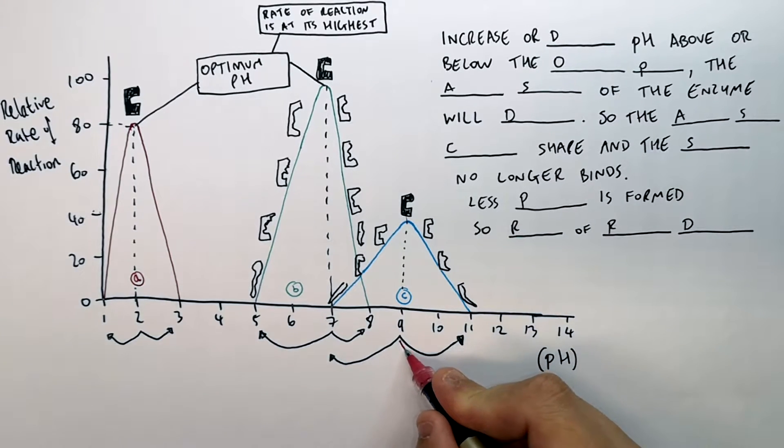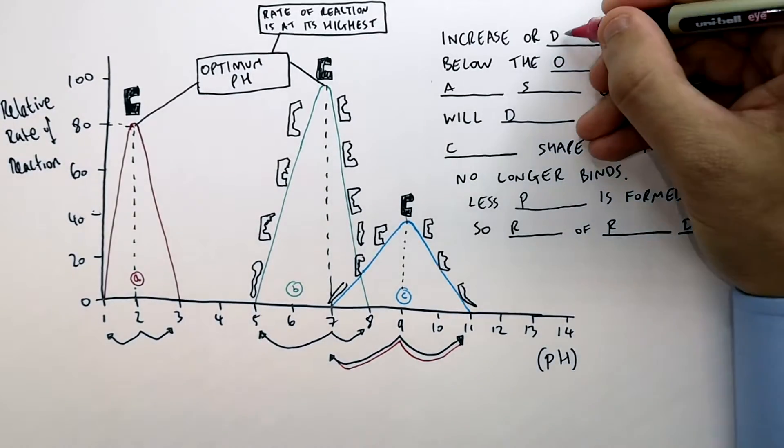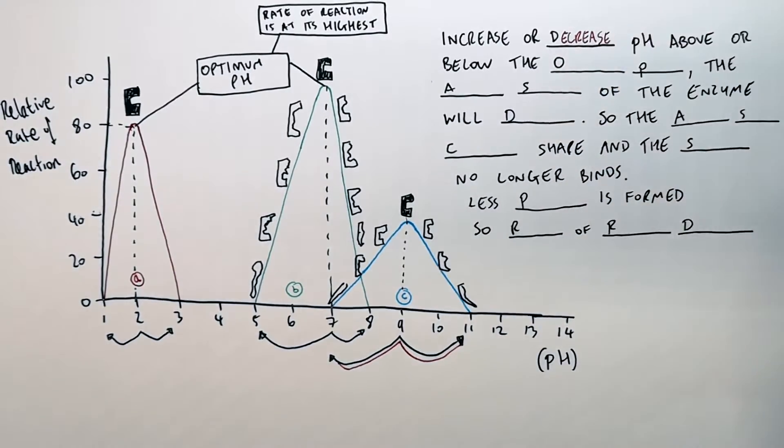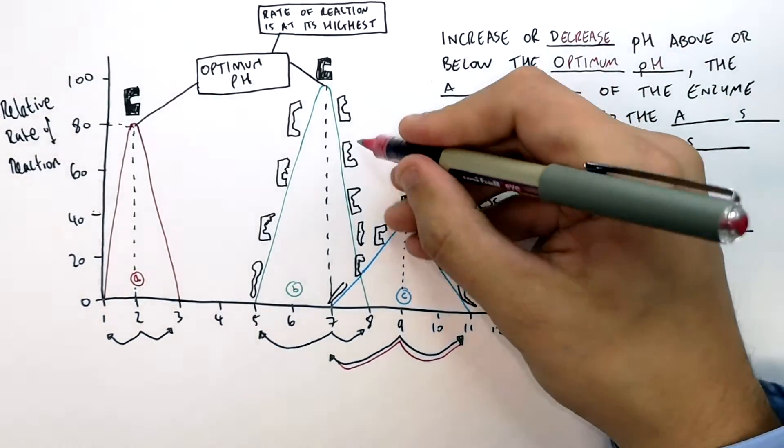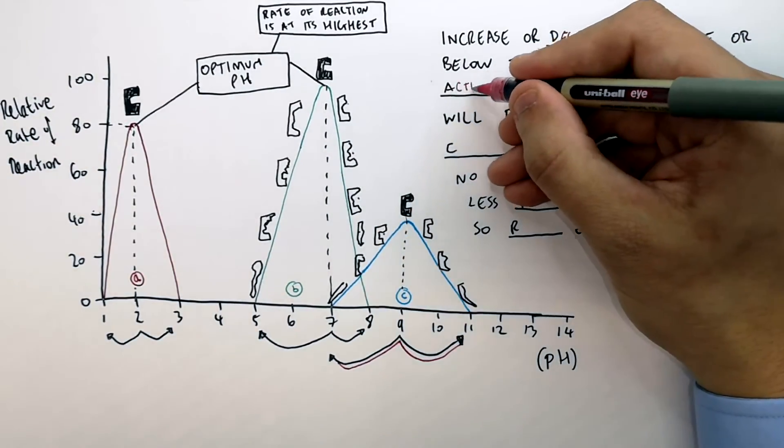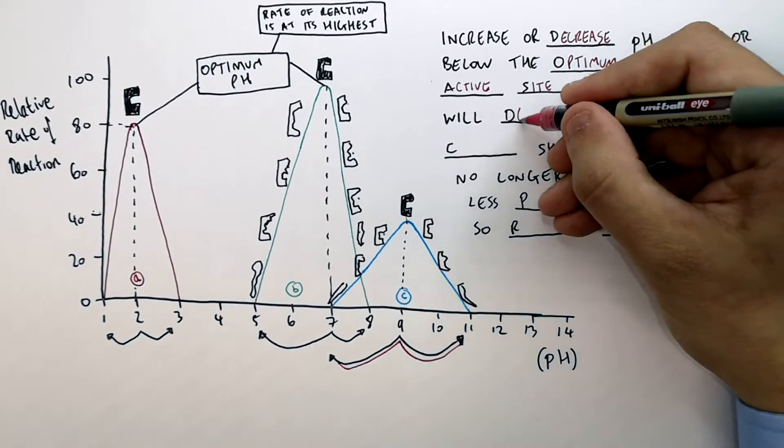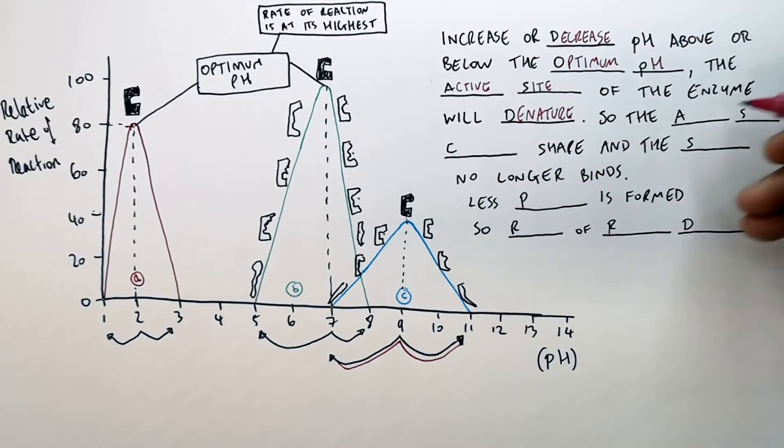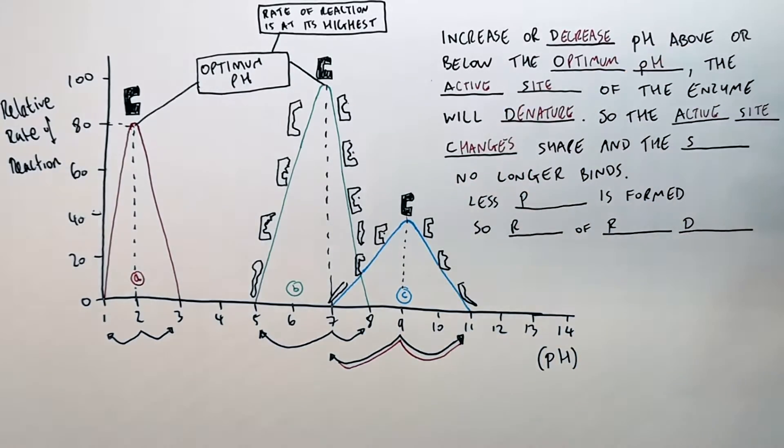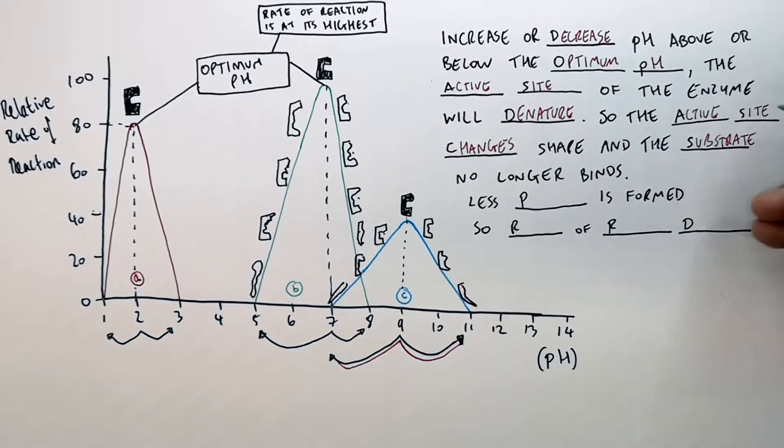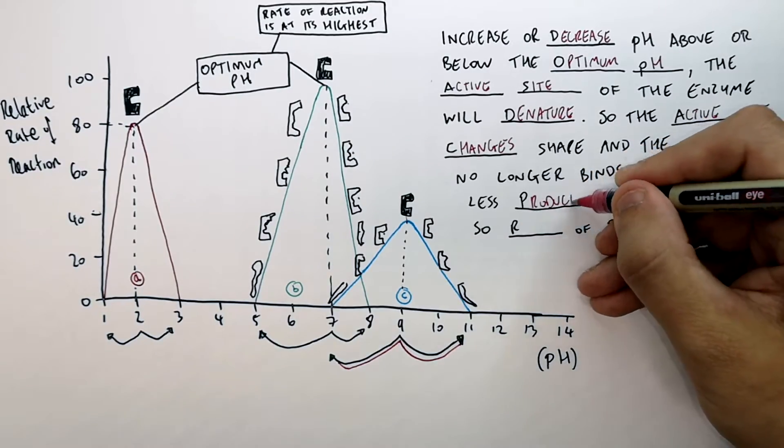So if you increase or decrease the pH above or below the optimum pH, the active site of the enzyme will denature. The active site changes shape and the substrate no longer binds. Therefore, less product is formed.